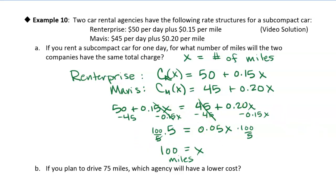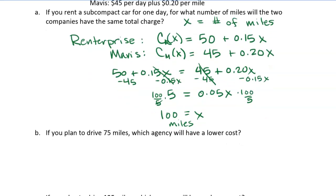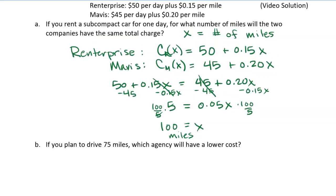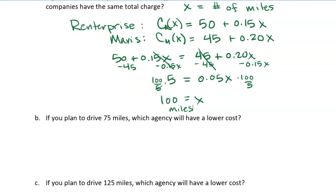Alright. So let's look at the next question. The next question is asking us, if you plan to drive 75 miles, which agency will have the lowest costs? Now you could reason it out and just say, well, okay, 75 miles, that's below 100 where they're equal. So renter prize charges $50 a day plus 15 cents a mile. So if you're going to drive a high number of miles, it might make more sense to rent from renter prize because they charge less per mile. So it would make sense that that would be a better deal for more miles, whereas Mavis charges you less per day but more per mile. So if you're going to drive fewer miles, it might make sense to rent from Mavis.